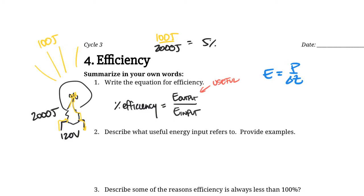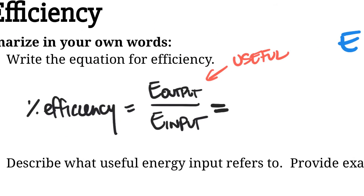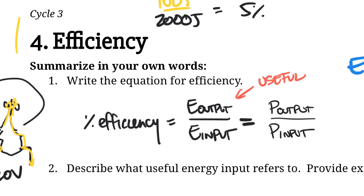So if we substitute in our power input and power output, we can cancel out the time and come up with another equation for efficiency. That is power output over power input. Depending on what we're given in the question, we can either work with energy or power to get the same answer.